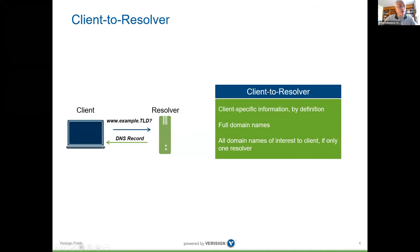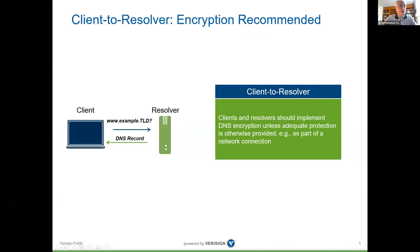First, the client-to-recursive-resolver exchange: the resolver sees client-specific information and full query names. If a single resolver is used, it sees all domain names for which resolution was requested by the client, and a passive observer can see the same things. For these reasons, we believe it's appropriate for clients and resolvers to implement DNS encryption, assuming no other cryptographic protection is available. We're mindful there may be enterprise network management concerns when adding encryption to a traditionally unencrypted protocol.